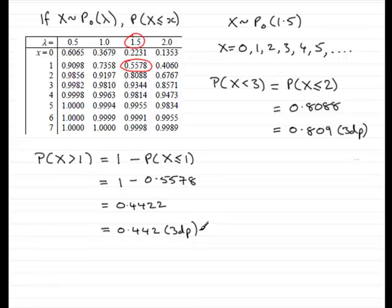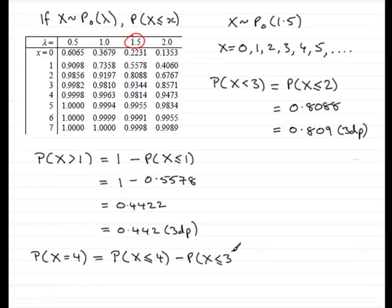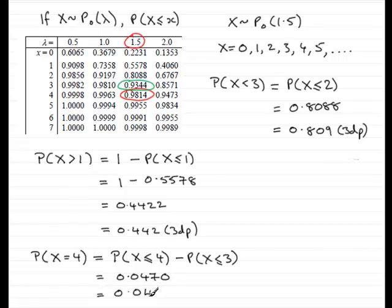You can also use the tables to work out the probability that x equals a particular number, let's say 4. You can say this is the same as P(X ≤ 4) minus P(X ≤ 3). Looking up those two values: P(X ≤ 4) is 0.9814 and P(X ≤ 3) is 0.9344. Subtracting gives 0.0470, which is 0.047 to three decimal places. That's how you can use the tables to work out various probabilities.